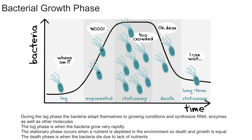As nutrients are used up, some bacteria start to die because there aren't enough nutrients. During the death phase, more bacteria are dying than are being produced, so the population decreases in size. It's also important to note that during this phase some bacteria can form spores, essentially preserving themselves to grow again when the environment improves. The long-term stationary phase follows, but it's rarely discussed.